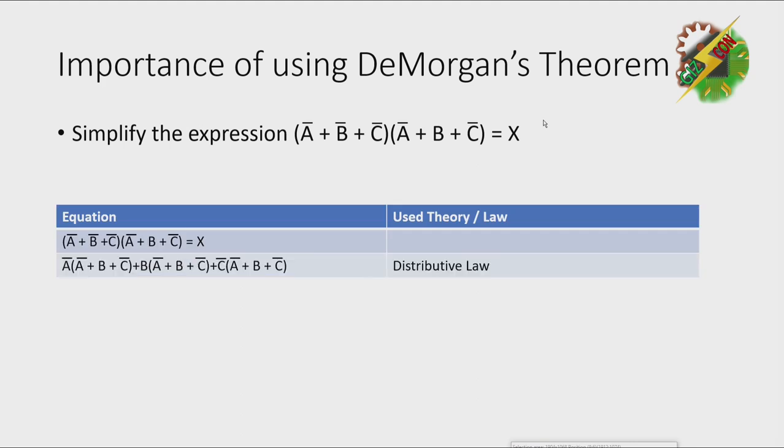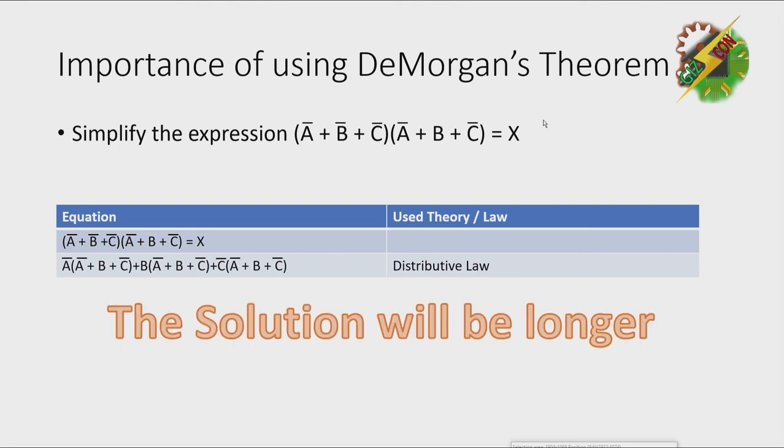When we're going to solve this expression using the distributive law only without using DeMorgan's theorem, we might come up with a longer solution. Because as you can see here, we're going to distribute this Ā to the entire equation and the C̄ also, and that would be a very long equation which is prone to mistake.